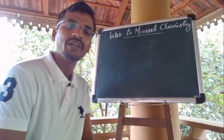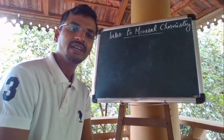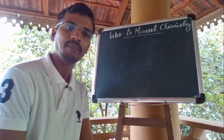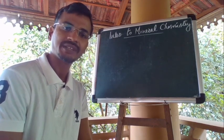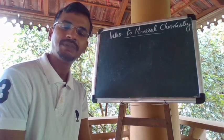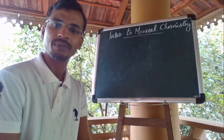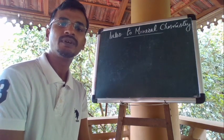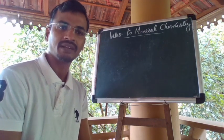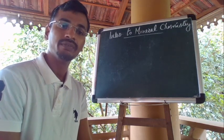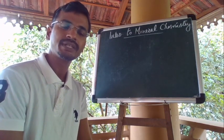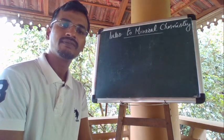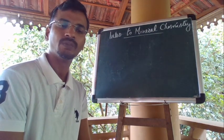Hello, good morning everyone. In your fourth module, you will be learning about mineralogy, structure, chemistry, optical and physical properties, mode of occurrences and uses of a number of groups of minerals. That will include olivine, garnet, pyroxene, amphibole, feldspars, feldspathoids and so on.